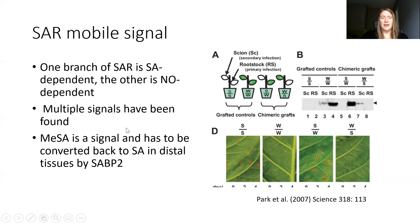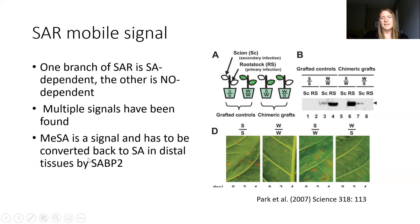There have been multiple signals found, and I'll just talk about one today. Modified salicylic acid is one of these signals and seems to be produced in the primary tissue, then moves through the phloem to the secondary tissue, where it has to be converted back to salicylic acid by the enzyme SA-BP2 for SAR to work.